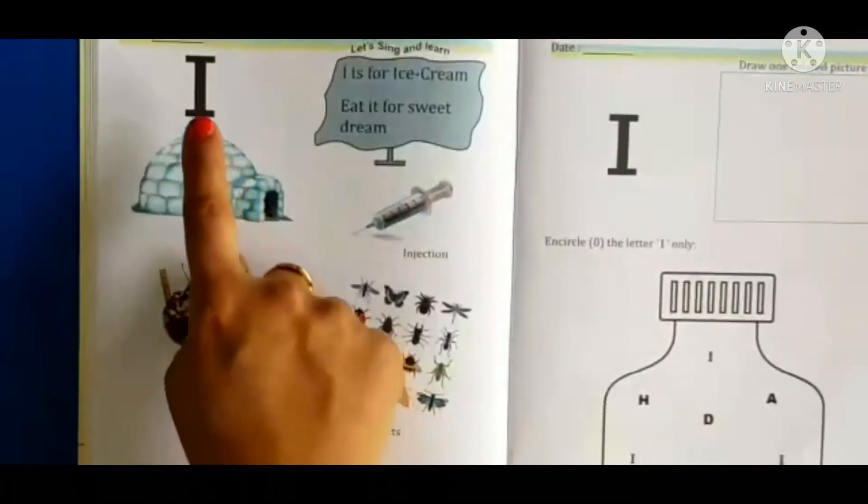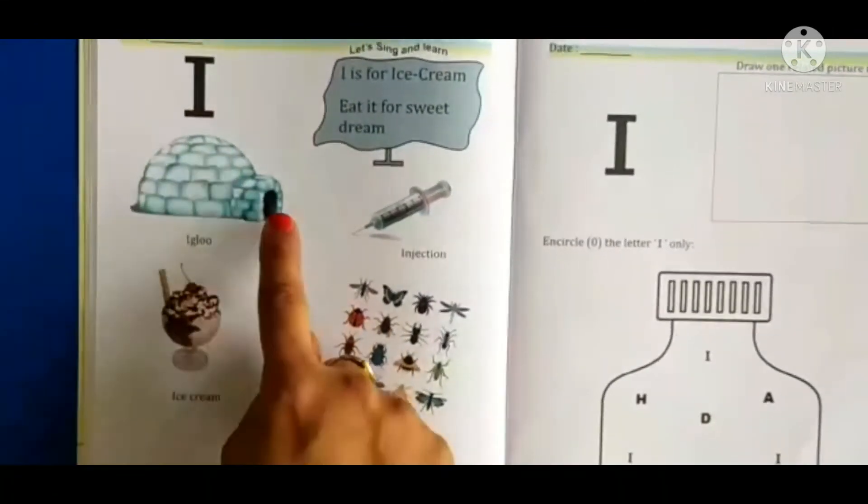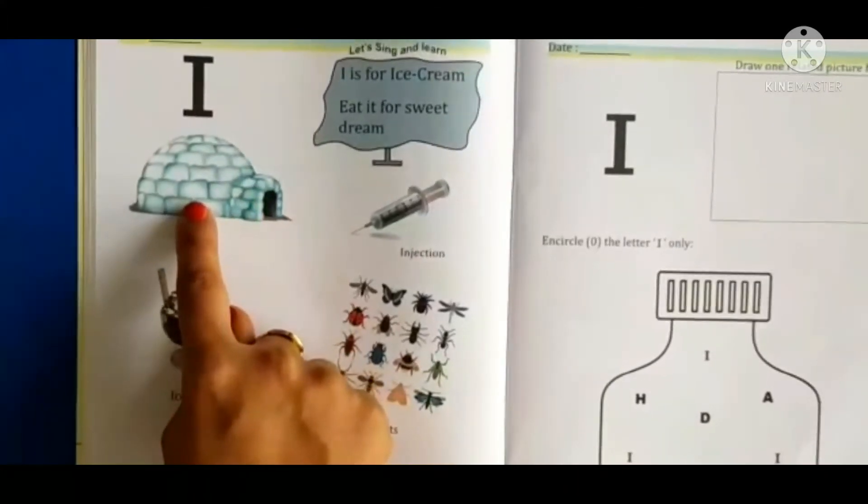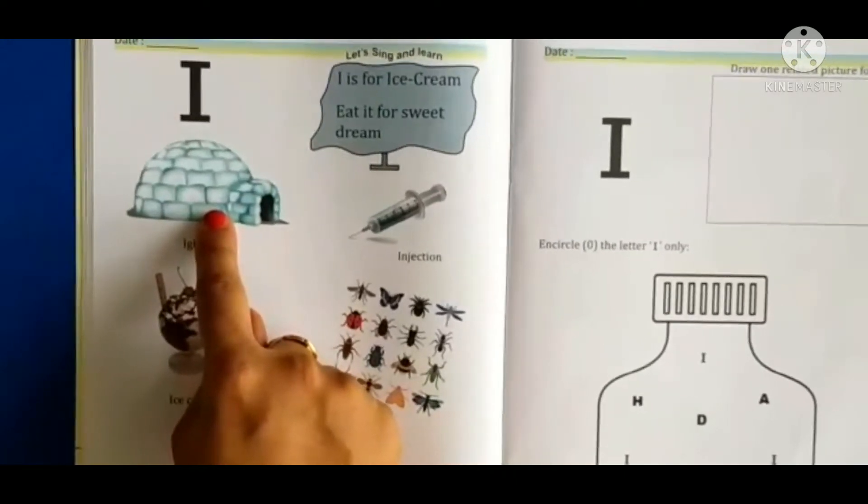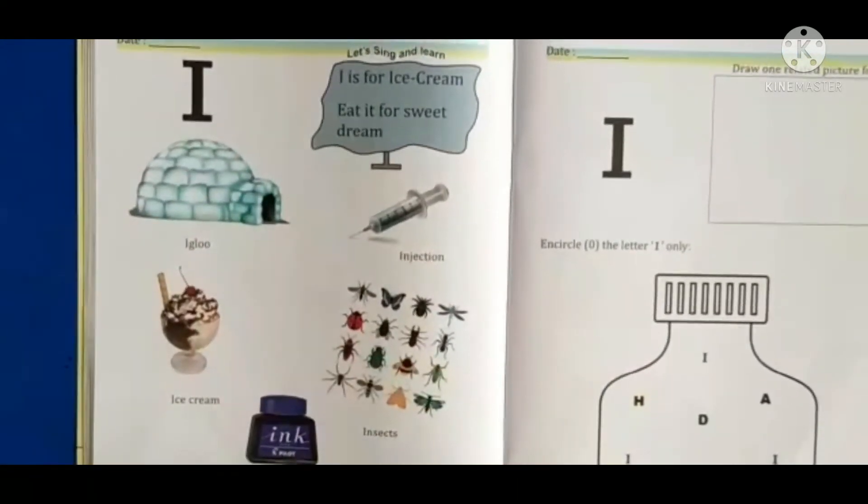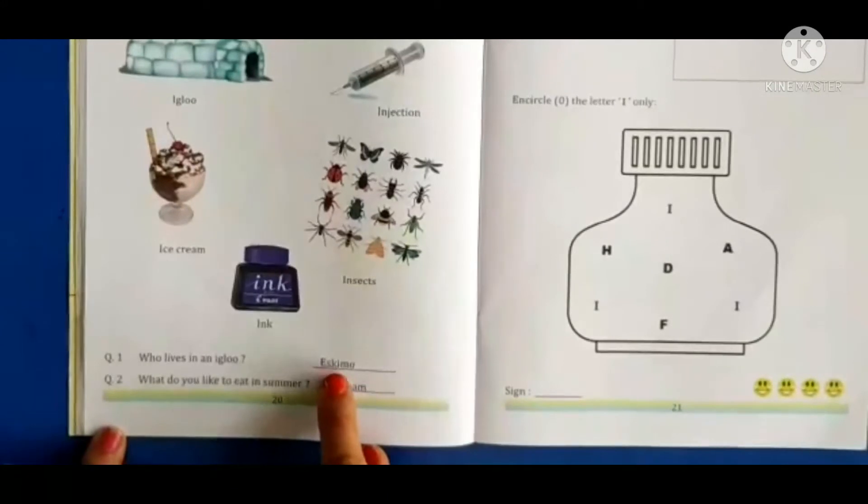Yes, ma'am ne aapko jo I for igloo bataya. Aapko pata hai, igloo ke andar kaun rehta hai? Jo log igloo ke andar rehte hain baraf mein, unko Eskimos kehte hai. Kya kehte hai? Eskimos. So our answer will be Eskimo.